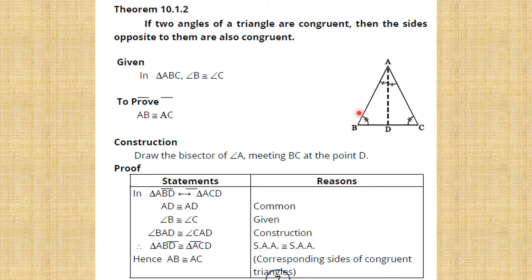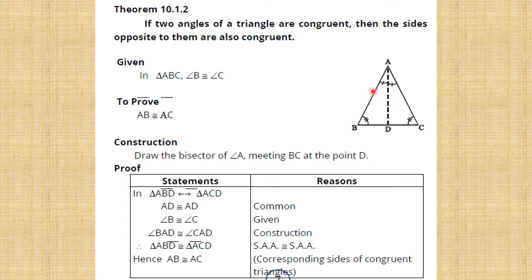We will draw the bisector of angle A, which meets side BC at point D. When we draw this bisector, it meets BC at point D.